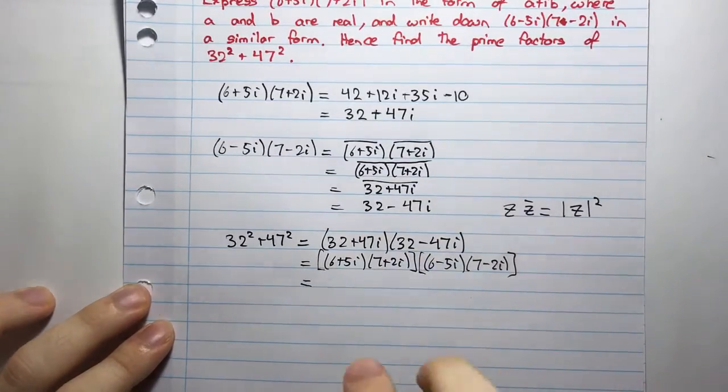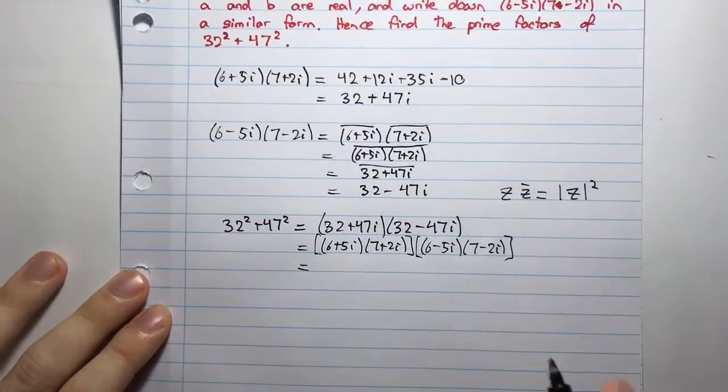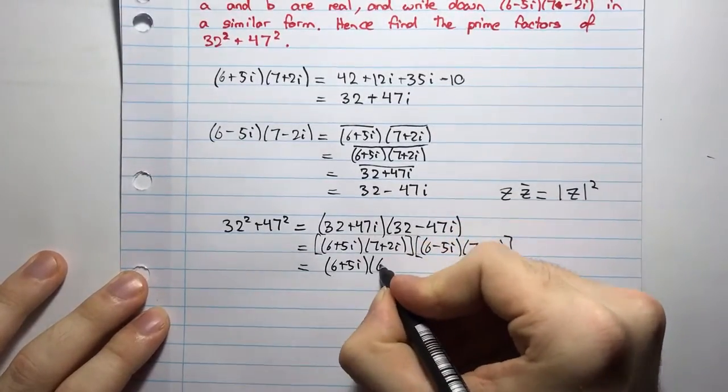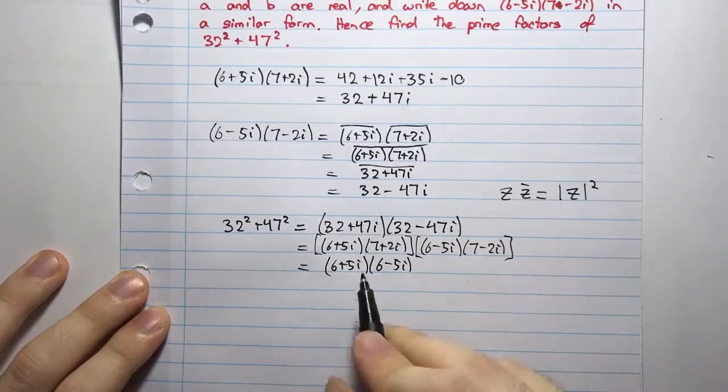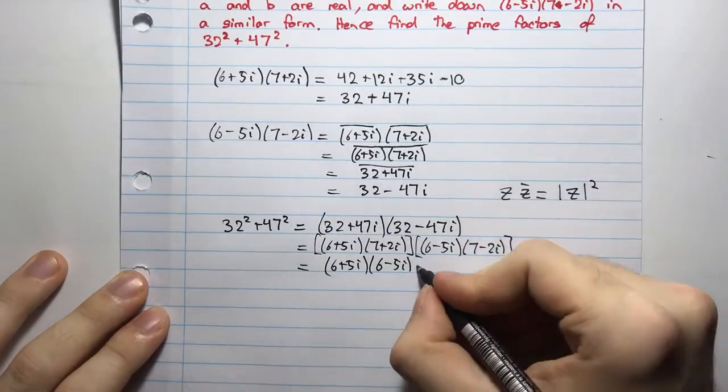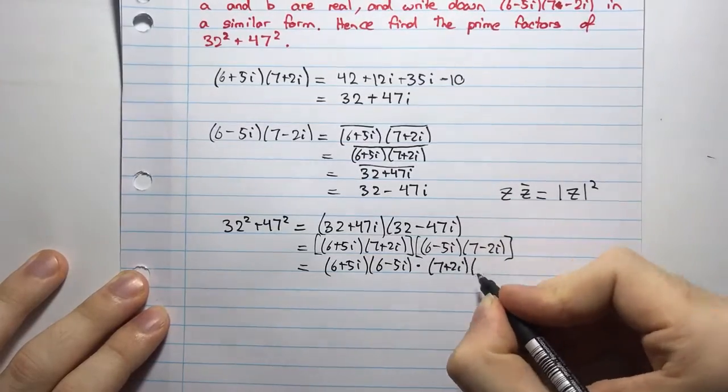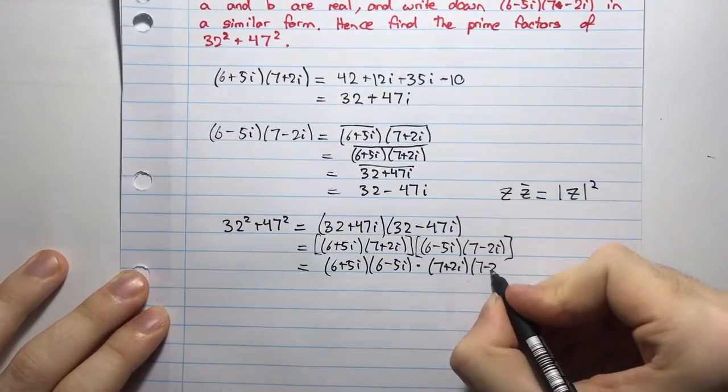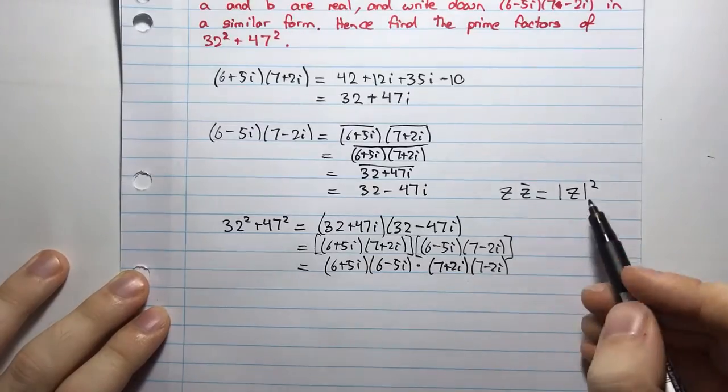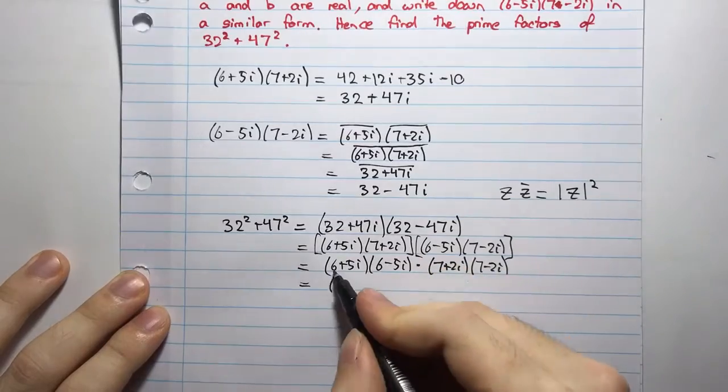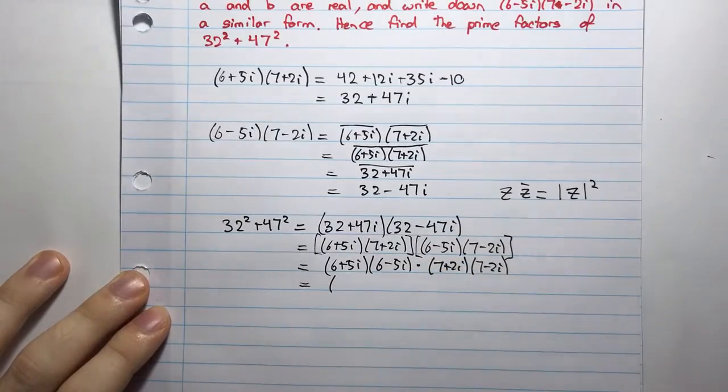The second, (6-5i)(7-2i). And now, I'm just going to write these in a different way. I'm going to put the conjugates together, because again, I have some conjugates. So, that's that with that, multiplied by (7+2i) with (7-2i). And now, I can use this formula again. And what do I have? I have 6² + 5².